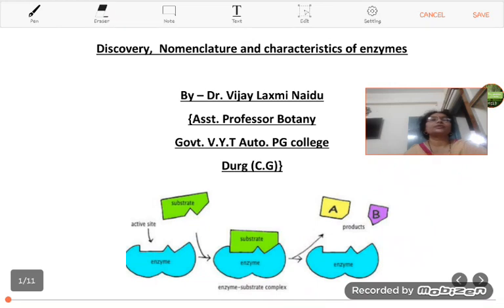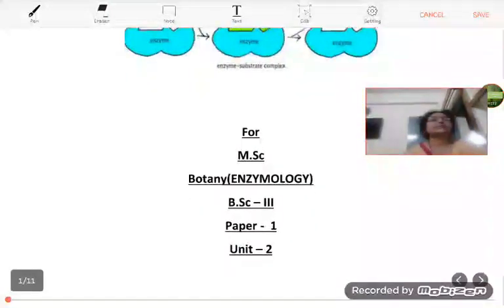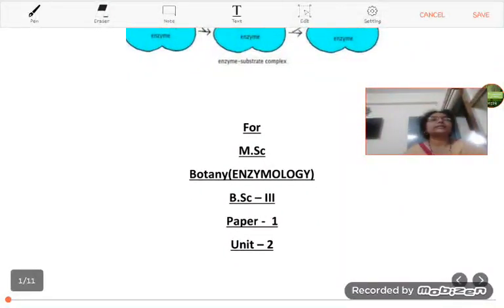With today's topic, Discovery, Nomenclature and Characteristics of Enzymes. Students, this topic is in MSc Botany Syllabus of Enzymology and it is also in the BSc 3rd Year Botany 1st Paper 2nd Unit.